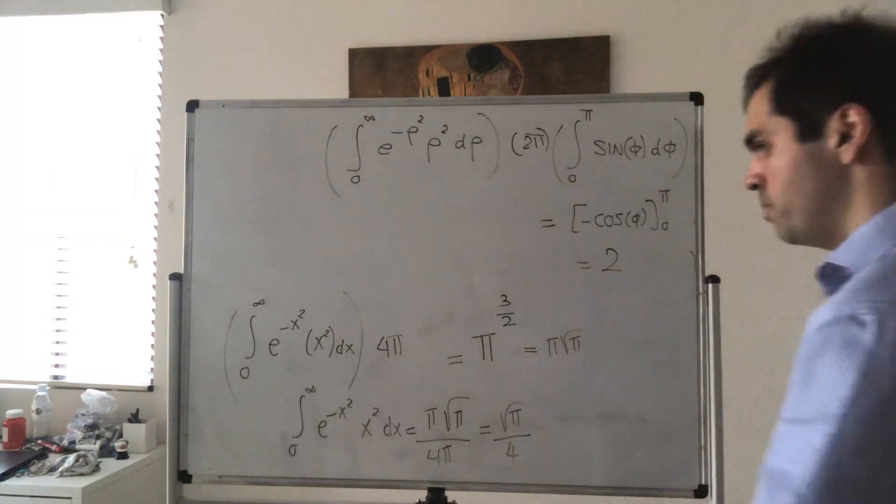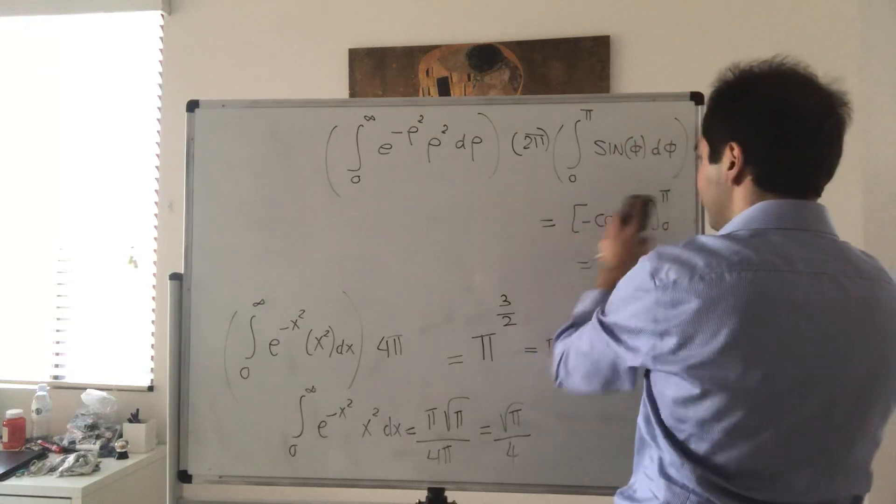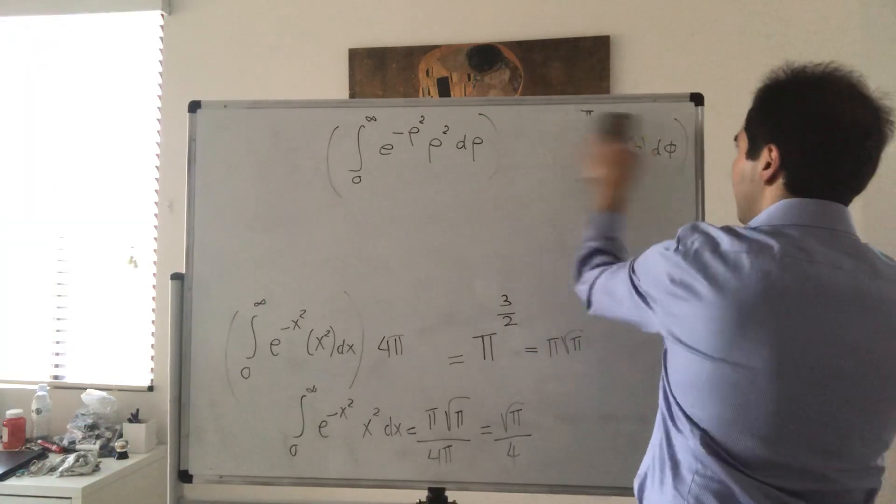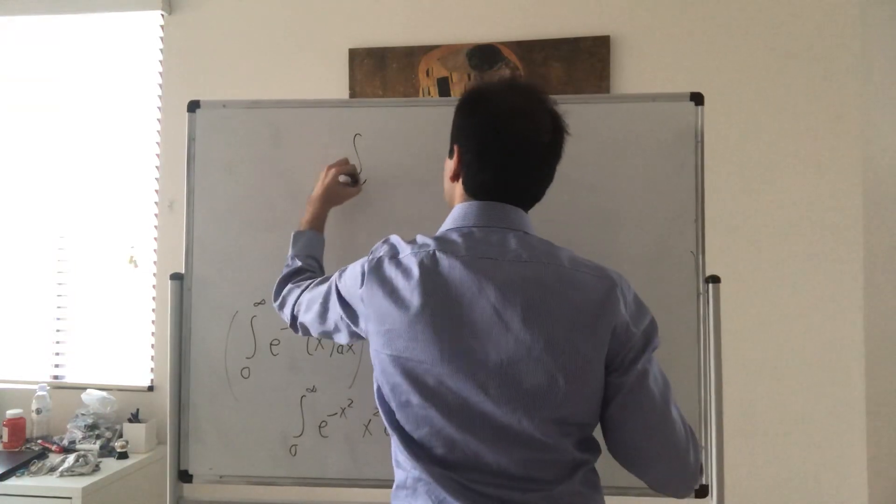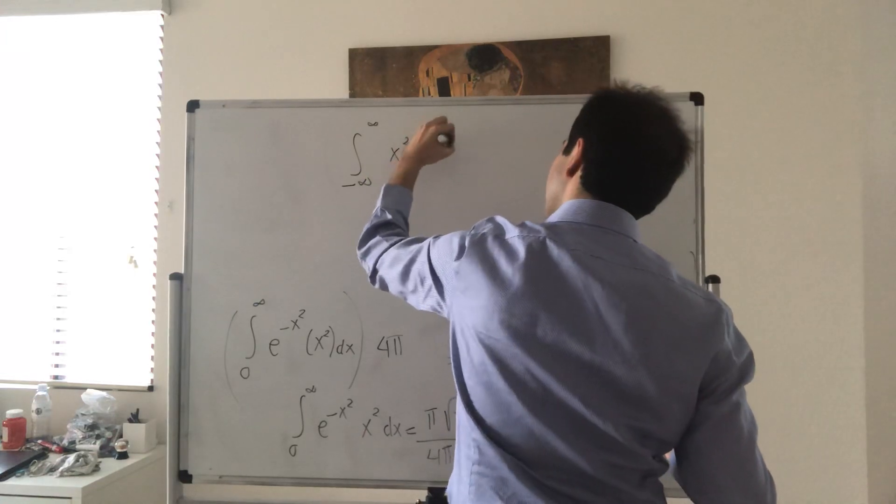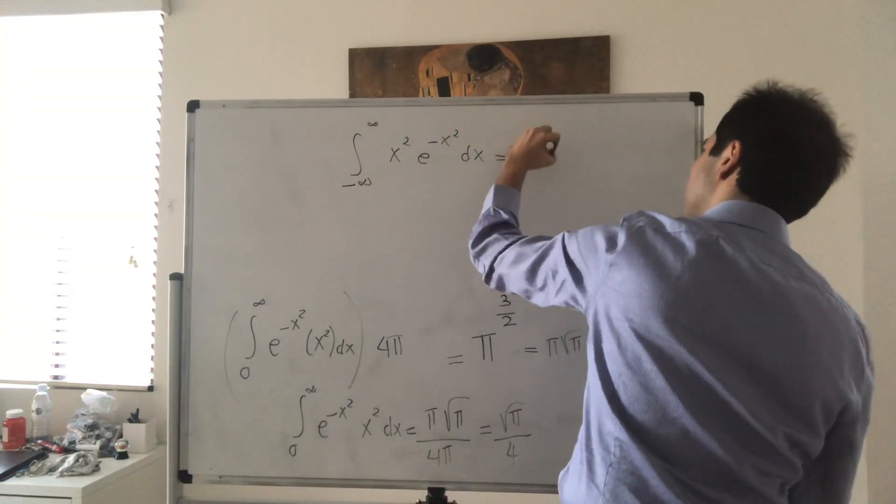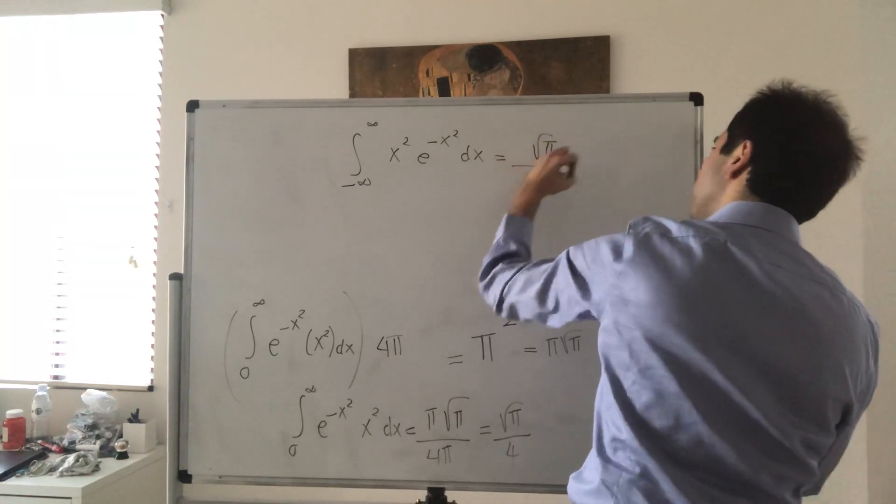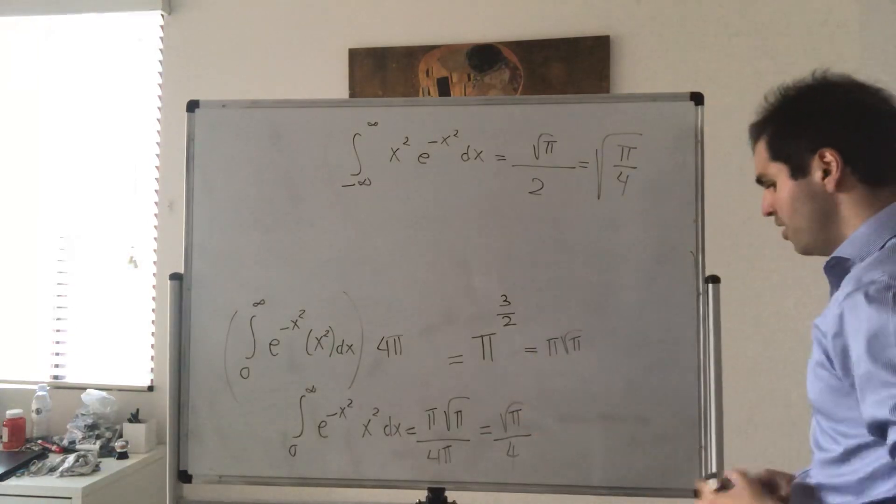And indeed even more is true, because this is an even function. If you want the integral from minus infinity to infinity, you just multiply this by 2. The integral from minus infinity to infinity of x squared e to the minus x squared dx—that just becomes square root of pi over 2.